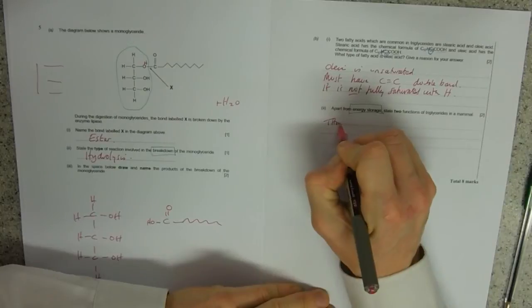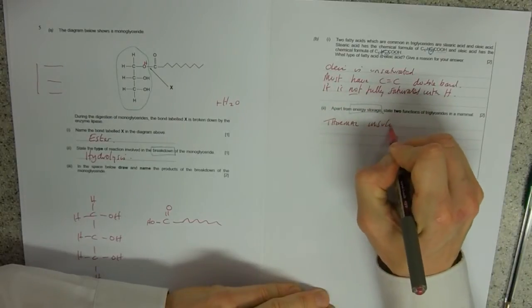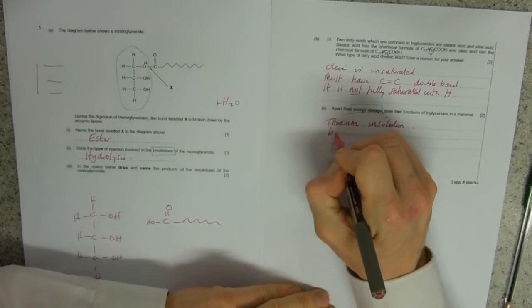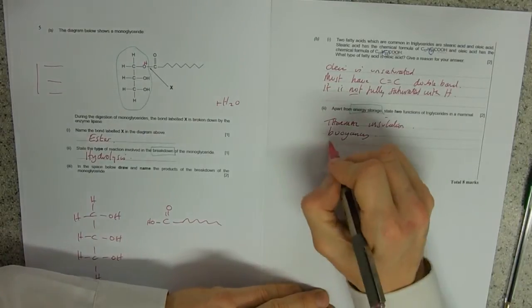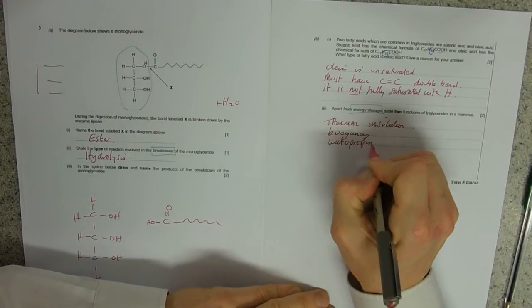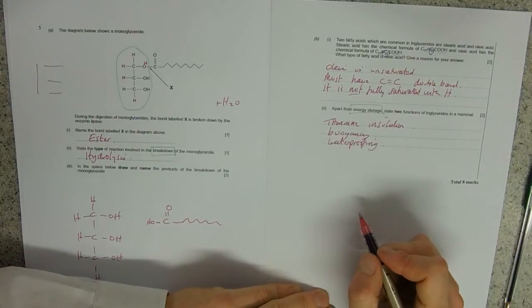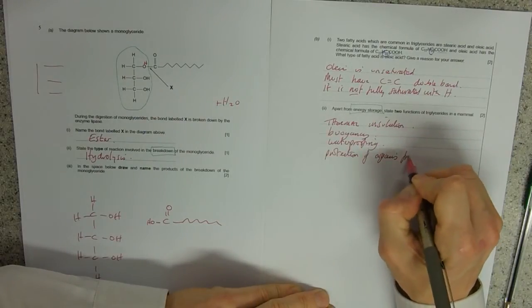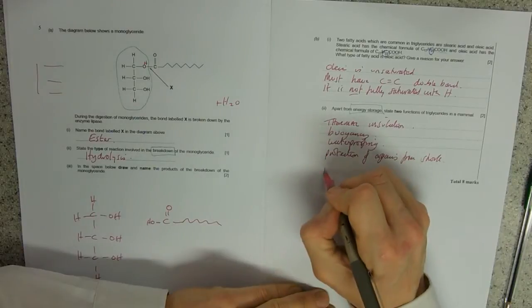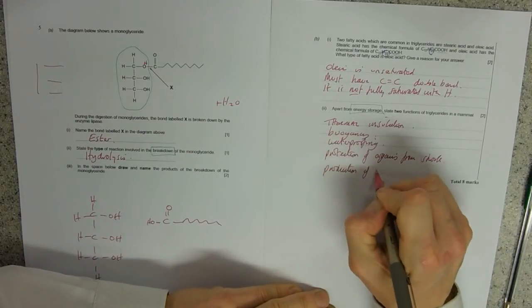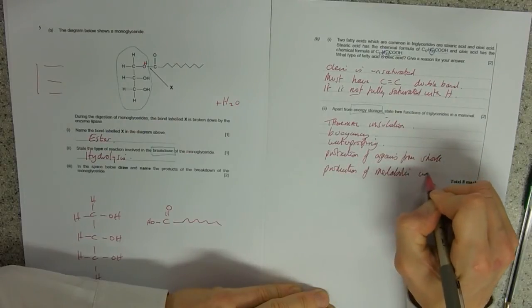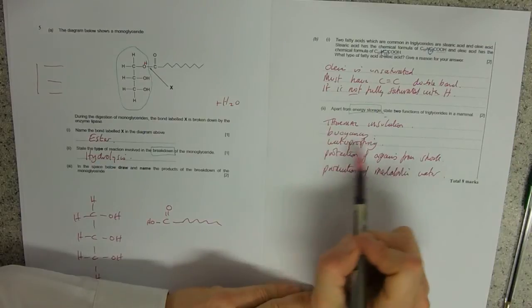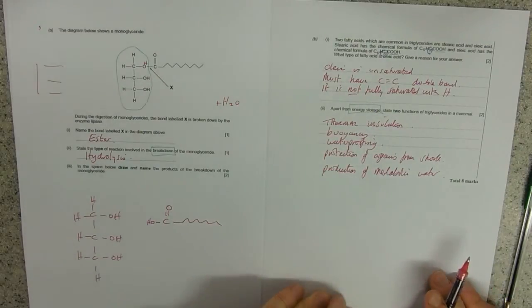So things like thermal insulation, buoyancy, waterproofing, that sort of thing, protection of organs from shock, production of metabolic water. But go for the easy ones, that's my advice. And two marks, that's my advice, and eight in total.